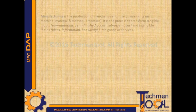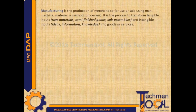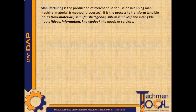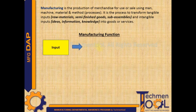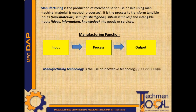Manufacturing is the production of merchandise for use or sale using man, machine, material, and method. It is the process to transform tangible and intangible inputs into goods or services. The manufacturing function involves processing inputs to get the desired output.